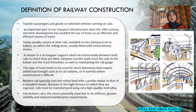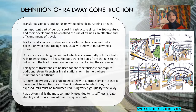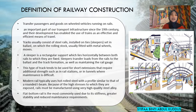A sleeper is a rectangular support which lies horizontally between both rails to which they are fixed. Sleepers transfer loads from the rails to the ballast and maintain the rail gauge. Modern rail typically uses hot rolled steel with a profile similar to that of a rounded I-beam. Because of the high stresses to which they are exposed, rails must be manufactured using very high quality steel alloy. Flat bottom rail is the most commonly used due to its stiffness, greater stability, and reduced maintenance requirements.